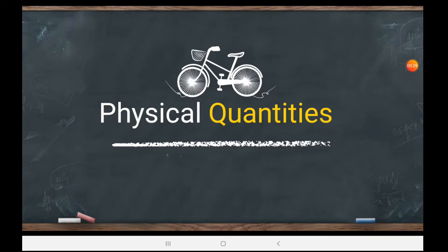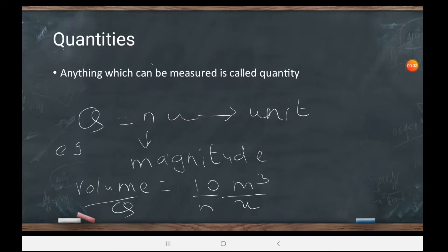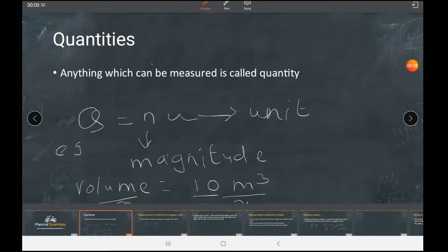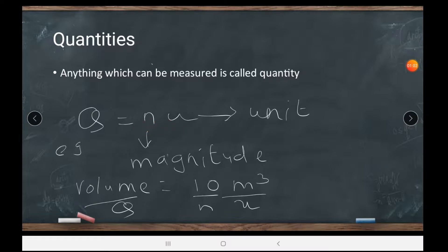What basically is a quantity? Anything which can be measured is called a quantity. For representing a quantity Q, we use Q = n × u, where n stands for magnitude and u stands for unit. For example, if volume is 10 meter cube, then 10 is the magnitude and meter cube is the unit.